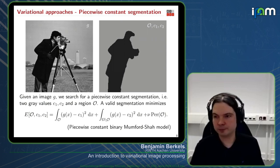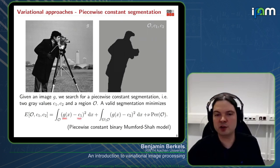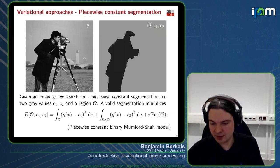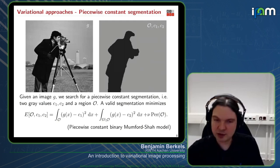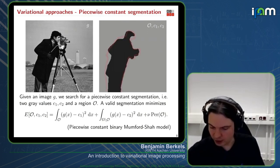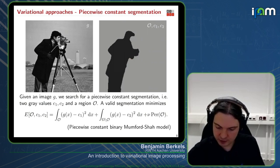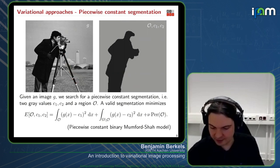If we imagined having no regularizer, this would be like simple thresholding: if G is closer to Z₁ it goes to the foreground, otherwise to the background. We add regularization because neighboring positions will likely be in the same segment — we penalize by the perimeter, essentially the length of the boundary. This ensures the boundary is short, which is why thin structures like the camera holder are excluded: they have a very long boundary but a very small volume.